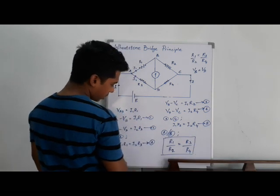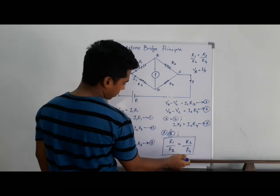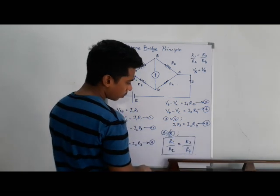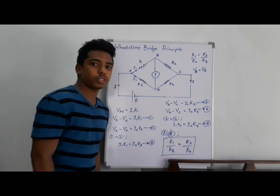Now dividing equation A by equation B, I get this result, which is R1 over R2 is equal R3 over R4. So that's the Wheatstone Bridge principle.